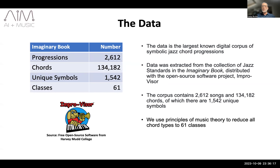We obtained a collection of chord progressions from a software application called ImproVisor, a free open source project developed by the late Bob Keller and his students at Harvey Mudd College. The corpus contains 2,612 jazz standards and is the largest collection of symbolic jazz chord progressions we know of. As shown on the table, it has over 134,000 chords, of which there are 1,542 unique symbols. That said, many of the symbols occur only once or infrequently.